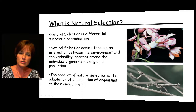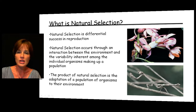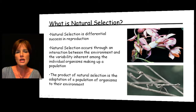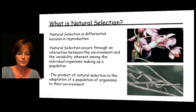The product of natural selection is the adaptation of a population of organisms to their environment. Looking at the walking stick in the picture, it matches very closely to the branch it's on — this is a product of natural selection. Green walking sticks on brown branches would be very susceptible to predators. So over time, it is the ones that more closely match their environment that end up surviving.